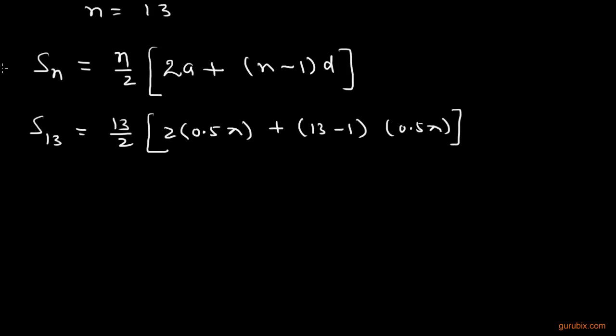Now, we shall calculate this value. This is 13/2 and if we multiply 0.5 by 2 we get 1π, and here is 13 minus 1 means 12. 12 into 0.5 means 6π. Therefore,